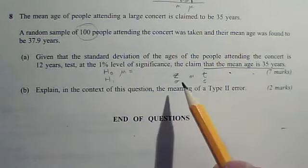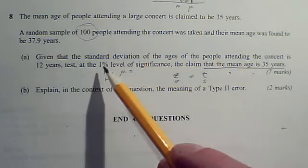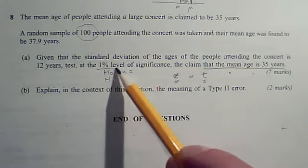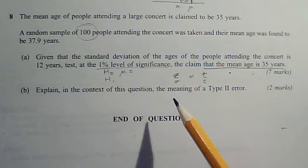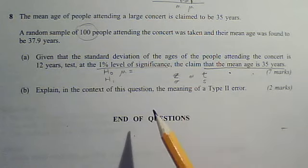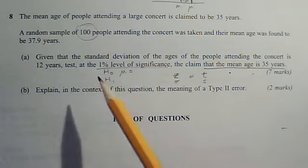So assuming you've worked out your z or your t, you clearly need to use your 1% level of significance, together with whether it's one-tailed or two-tailed, get your feasible region, make a verdict about h0.